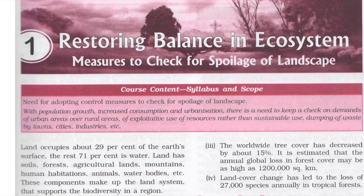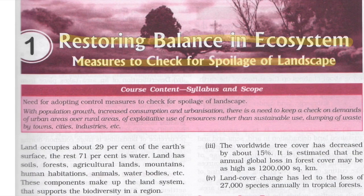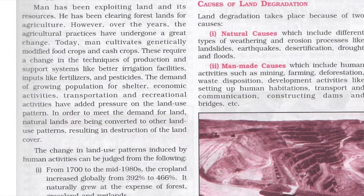Welcome to 'To the Point.' In this session, we are discussing restoring balance in ecosystems and the measures to check spoilage of the landscape. The land consists of 29% of Earth's surface and 71% water. Land has soil, forests, agricultural lands, mountains, human habitations, animals, and water bodies.